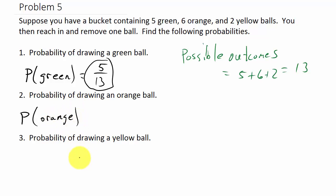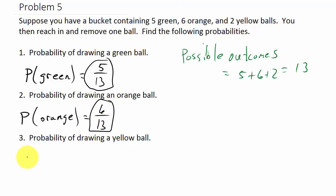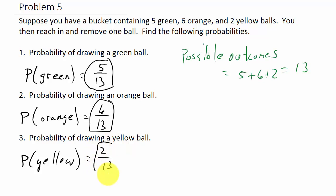The probability of drawing an orange ball: there are six orange balls, so that's six over thirteen. And the probability of drawing a yellow ball: there are two yellow balls, so that's two over thirteen.